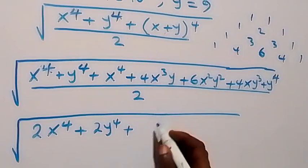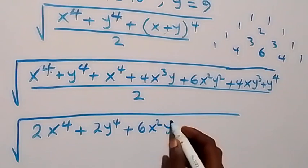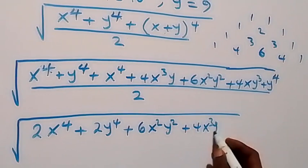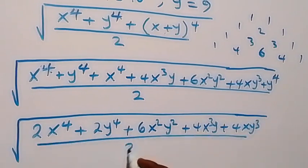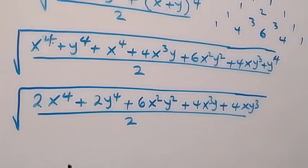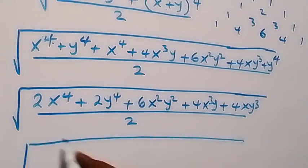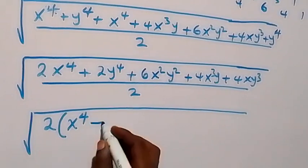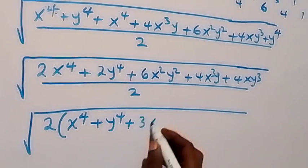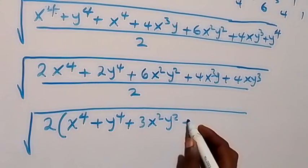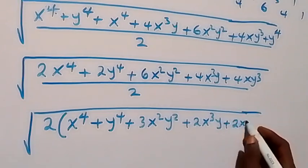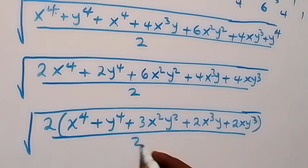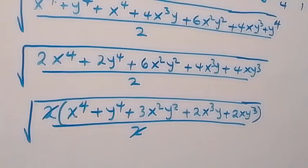Then plus 6x squared y squared, then plus 4x cubed y, then plus 4x y cubed, all divided by 2. Once we have that, we can factor 2 out, giving us square root of 2 times the bracket: x raised to power 4 plus y raised to power 4 plus 3x squared y squared plus 2x cubed y plus 2x y cubed, close bracket, all divided by 2. The 2s cancel out.